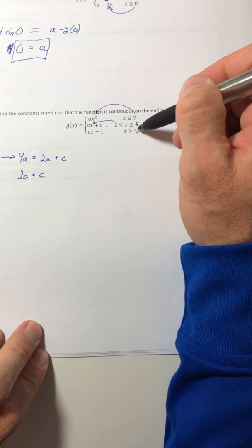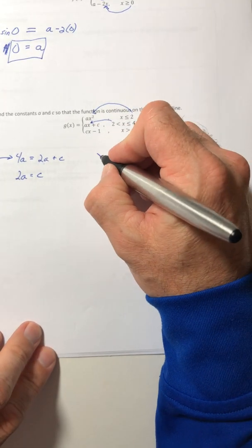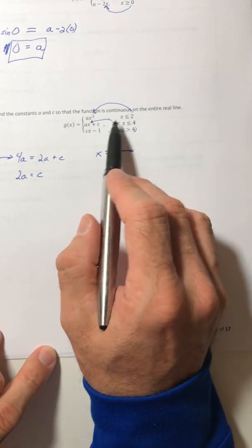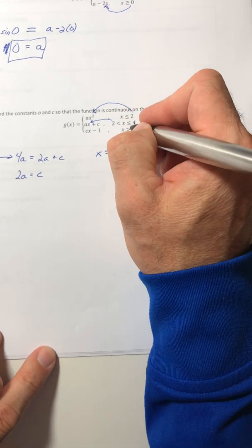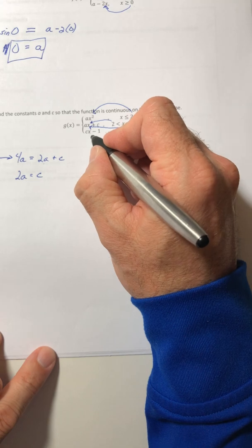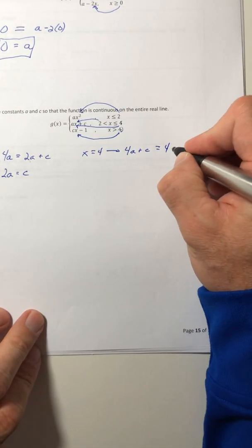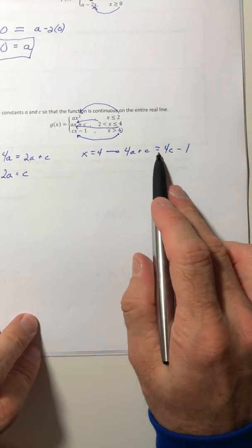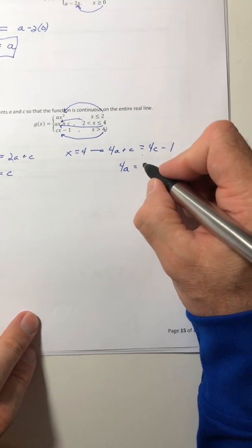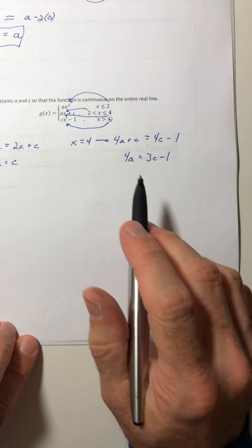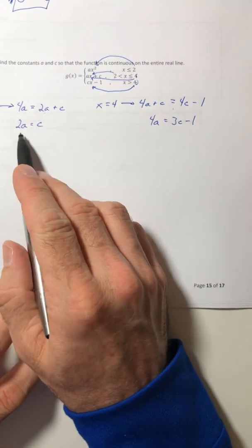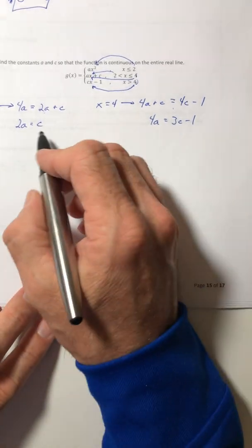Now I can work with the other potential discontinuity at x equals 4. I'm going to plug 4 into the second line and the third. The second line is used twice because it's affected at both boundaries. Plugging 4 into the second line gives 4a plus c, and into the third line gives 4c minus 1. They should equal each other, so bringing c over to the right: 4a equals 3c minus 1. Now you have a system of equations. Substitution works nicely since you already know that c equals 2a.